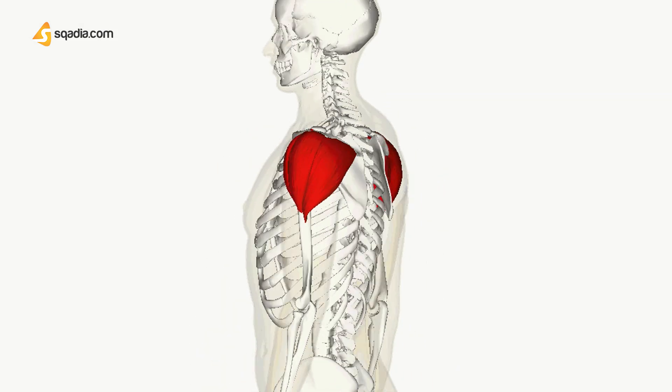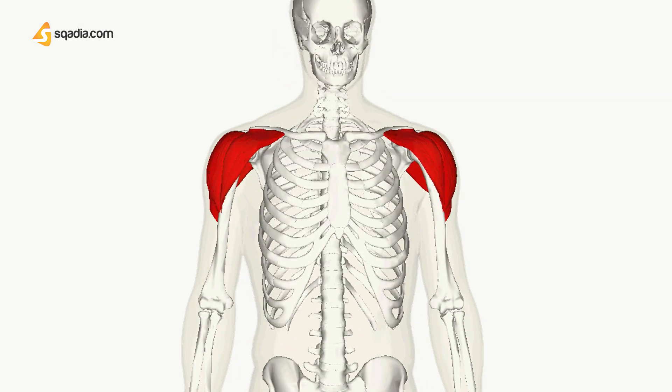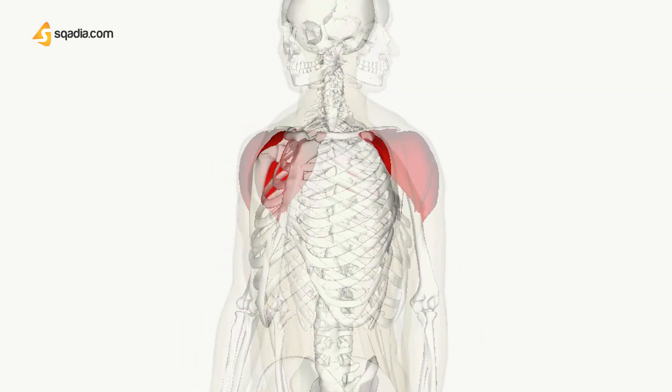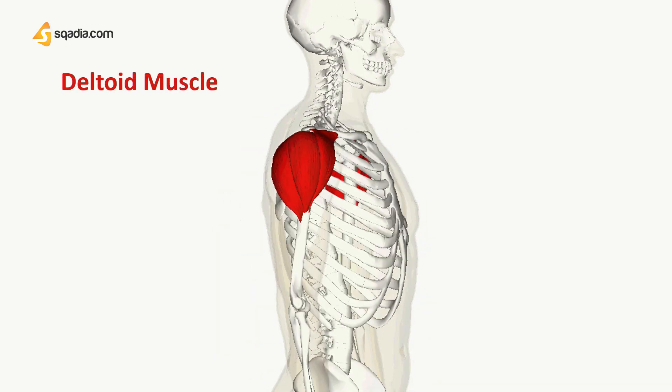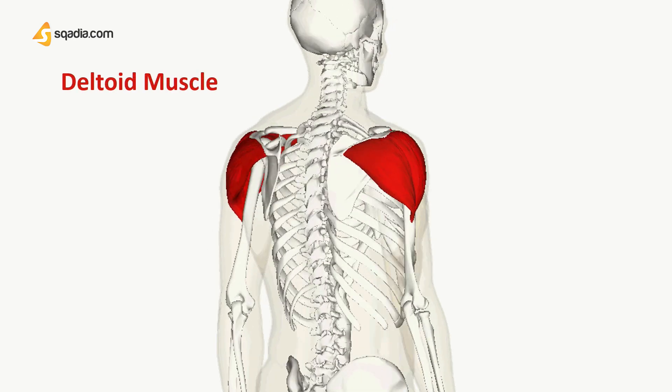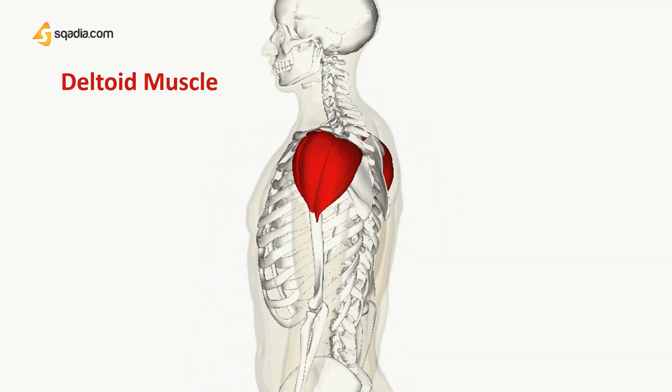Coming to the lateral aspect of the greater tubercle, we have the deltoid muscle covering it. This results in the normal rounded shape of the shoulder.